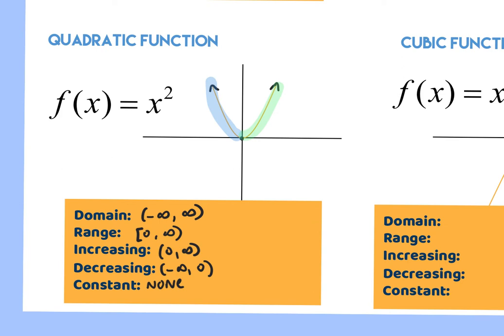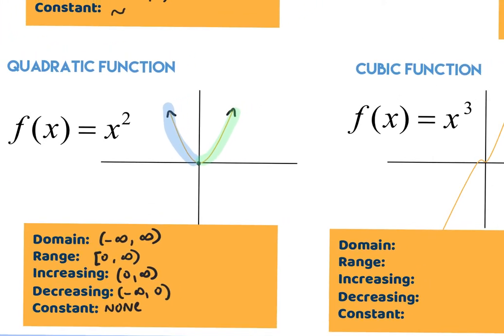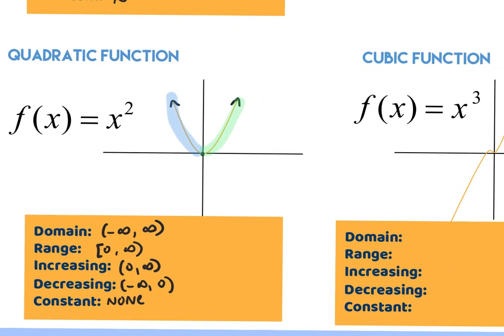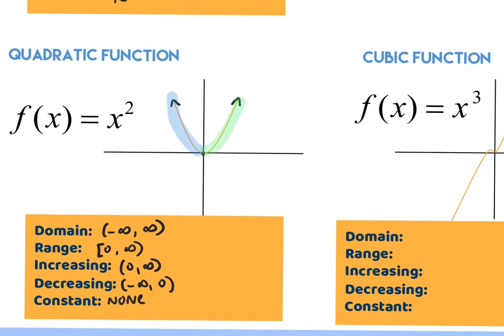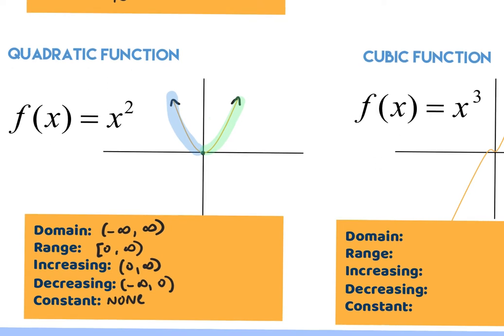The graph has to have a sharp point for the absolute value — it must be a V — whereas the parabola is that U shape. Increasing and decreasing can never have brackets because a single point can't be increasing or decreasing.